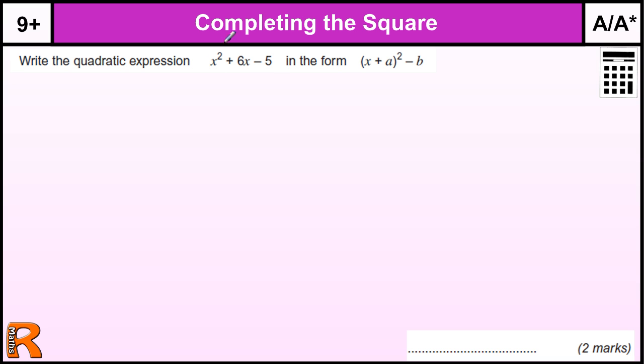We just want to rewrite this quadratic into the form that's stated here. So if we multiply out this form, x plus A all squared, so that's x plus A times x plus A, then we're going to take away B.